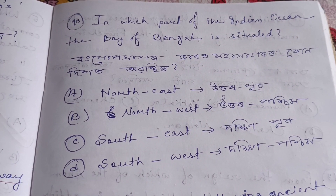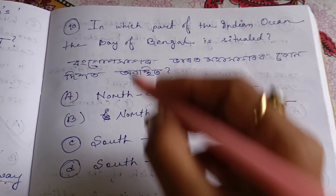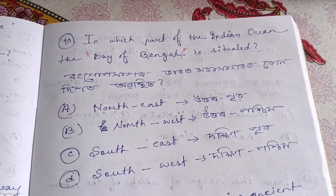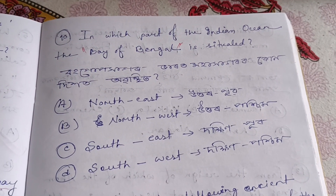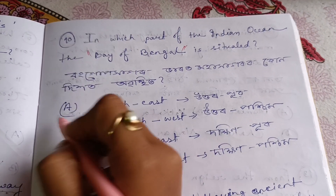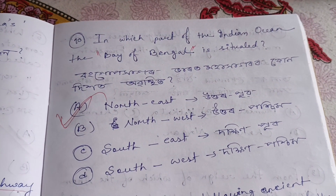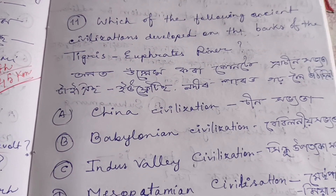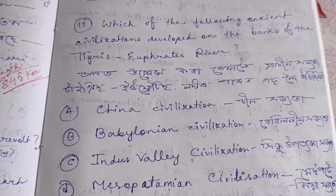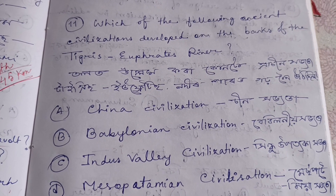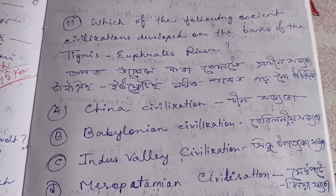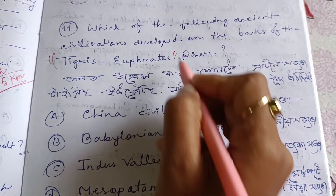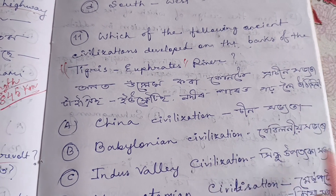In which part of the Indian Ocean is the Bay of Bengal situated? Which of the following ancient civilizations developed on the banks of the Tigris-Euphrates river?